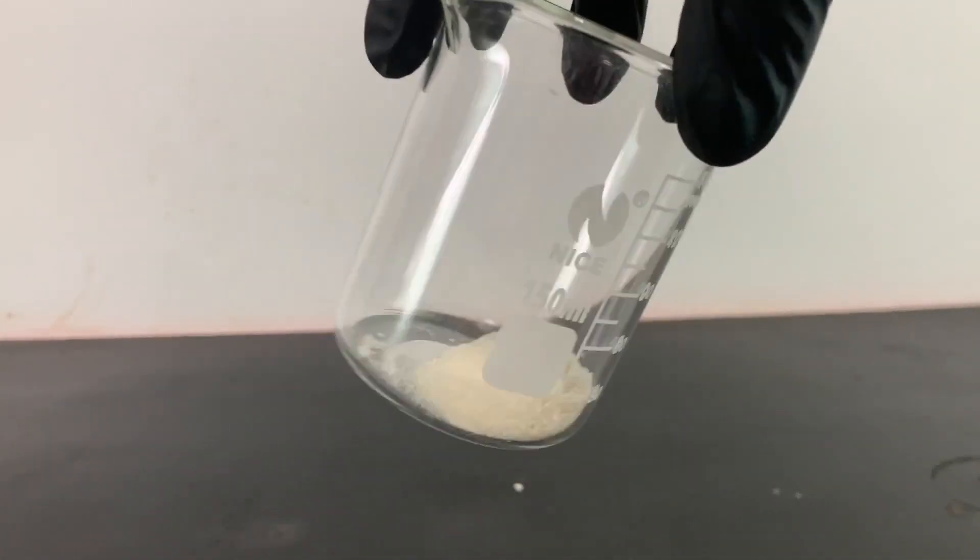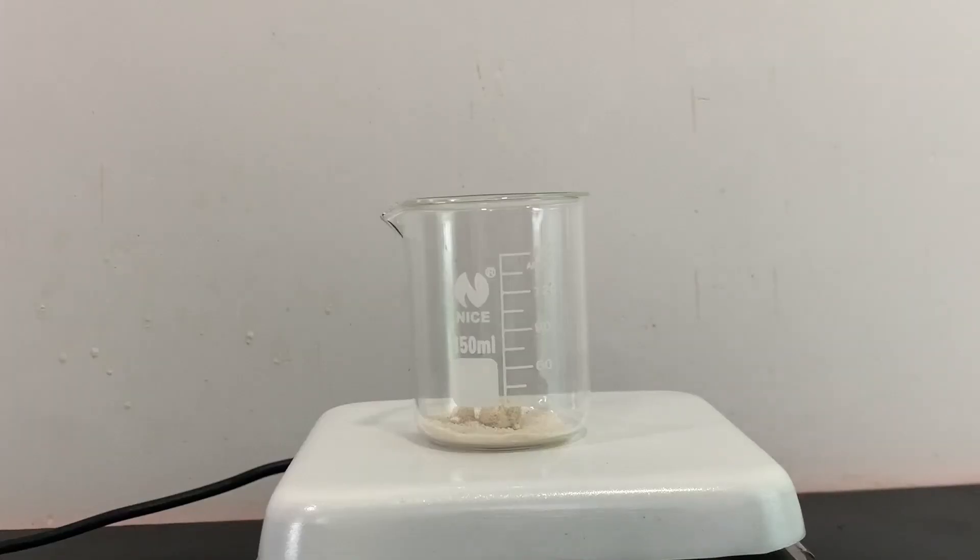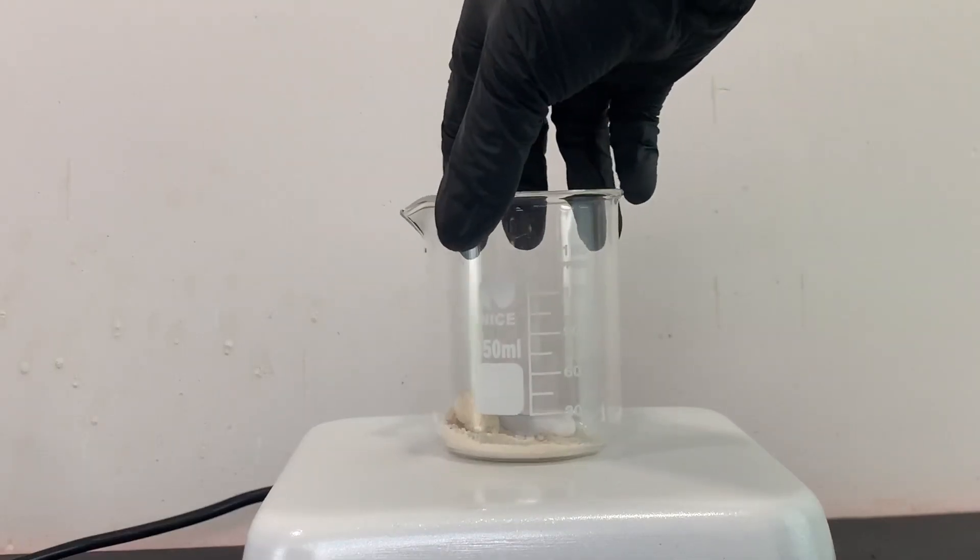To get started, I weighed out 3.6 grams of sulfonylic acid into a 100 milliliter beaker. I placed the beaker on my hot plate and added in a magnetic stir bar.